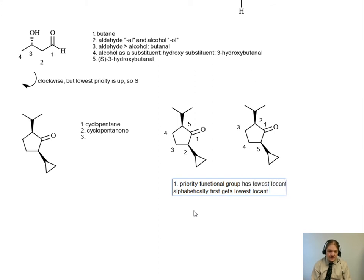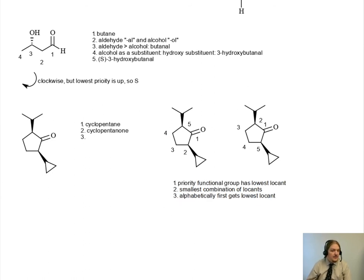Alright, so first we assign the priority functional group to the lowest possible locant. And then we assign locants to generate the smallest combination of locants. And then the alphabetically first gets the lowest locant. So what that means is that we want to choose the arrangement on the left because cyclopropyl is alphabetically before isopropyl.